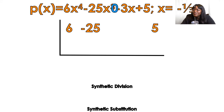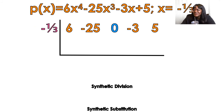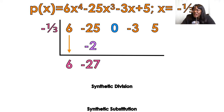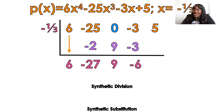They already gave me my divisor as x equals, so I do not have to change the sign. I have to change the sign when it's x minus something or x plus something, but if it's x equals, I leave the number the same. I bring down my first number and ask: what's a third of 6? Well, 2 — but it has to be negative. Add those two inside numbers to get negative 27. What's a third of 27? It's 9 positive, because negative times negative is positive. Add: 0 plus 9 is 9. What's a third of 9? Negative 3, because negative times positive is negative. Add to get negative 6. What's a third of negative 6? Positive 2, because negative times negative cancels to positive. My remainder ends up being 7.